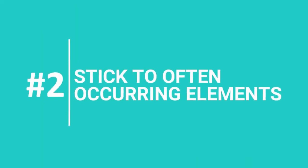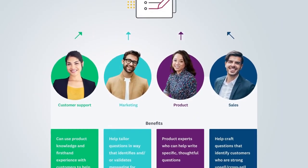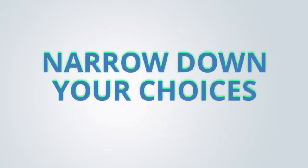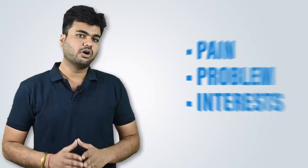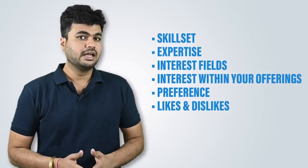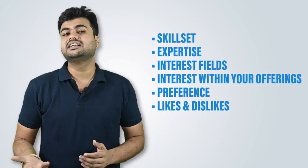Step 2: Stick to often occurring elements. Select a few of the most common responses you get from clients. This helps you narrow down your choices while building your persona. Your persona must include details about what the majority of people deal with, such as their pain, their problems, their interests, etc. For instance, look at behavioral patterns like skillset, expertise, interest fields, interests within your offerings, preferences, likes, and dislikes.